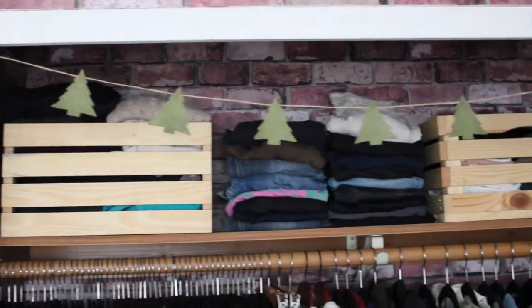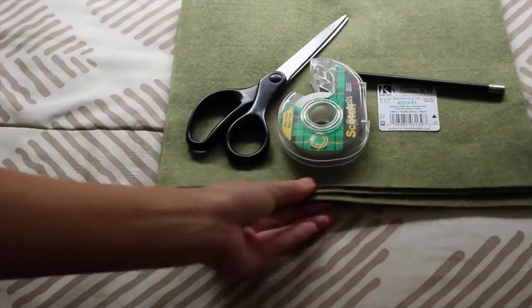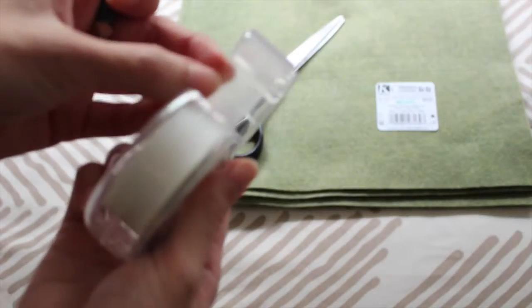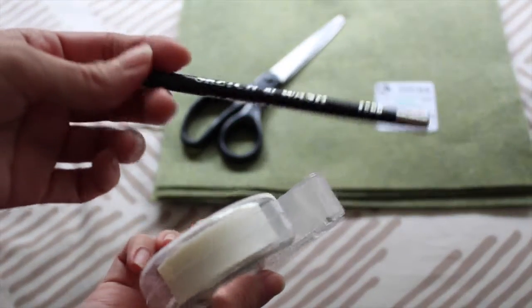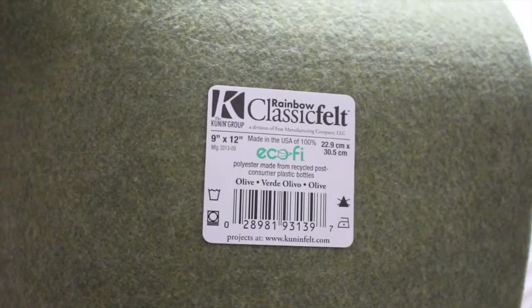Hi guys! For this tutorial, I am making a Christmas tree garland to hang in my closet. I'm using matte tape to draw onto the felt, which is in the color olive.